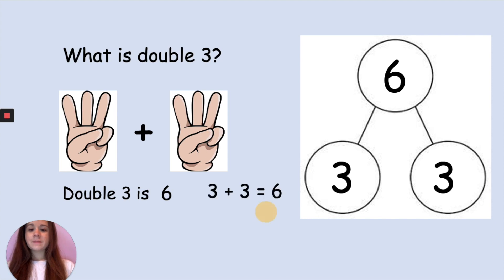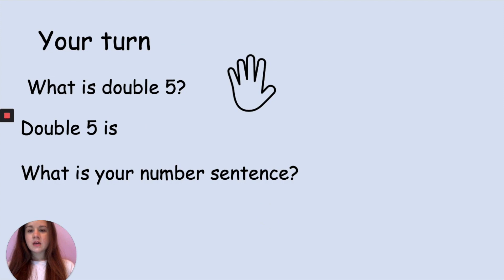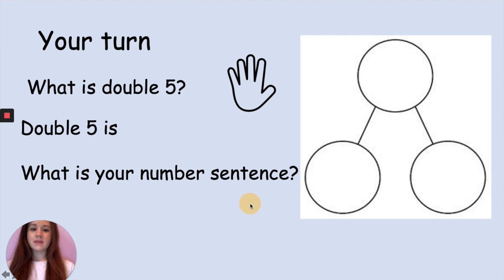Now it's your turn. What is double 5? Can you write your sentence: double 5 is, and then tell me the answer. Write your number sentence so 5 add something equals something else and complete your part-whole model. Pause the video to complete this.